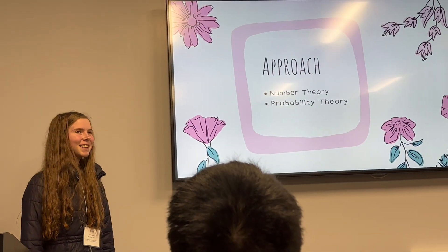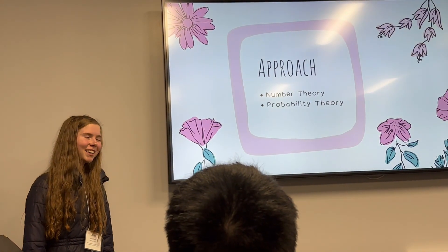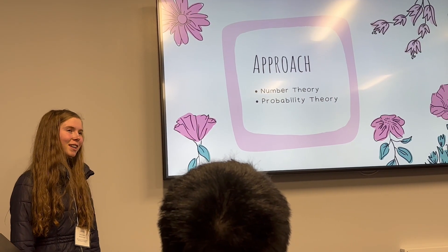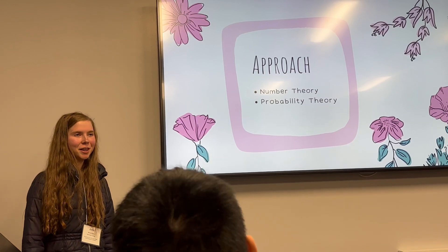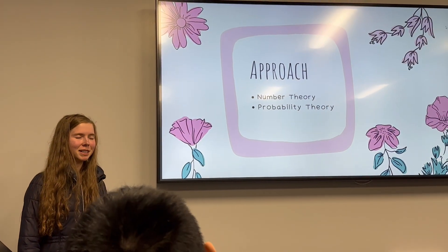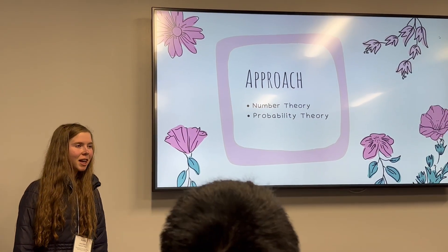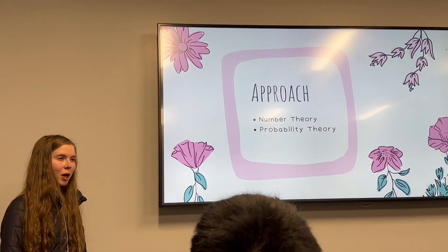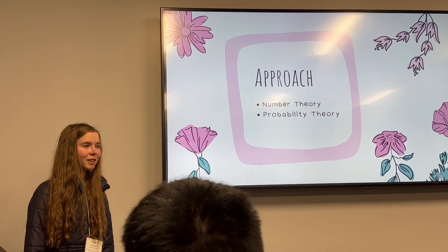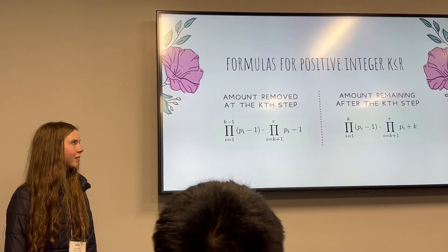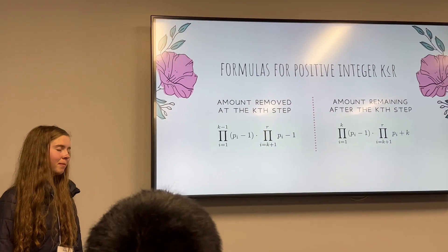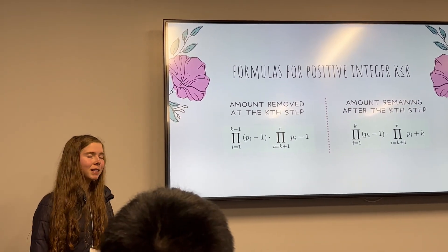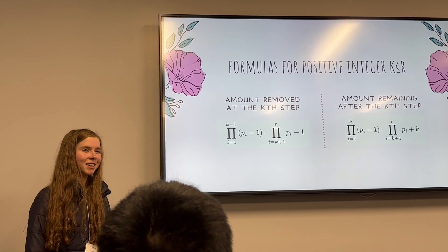Now we can get into the fun of actually calculating our results. We use approaches from number theory and probability theory, which are two fascinating branches of mathematics. Number theory analyzes integers and their properties, while probability theory looks at the likelihood of events occurring. Using those methods, we calculate formulas for any positive integer k that is less than or equal to r.